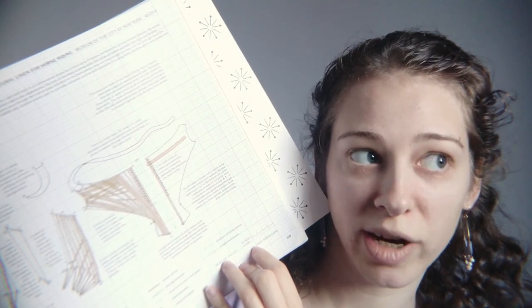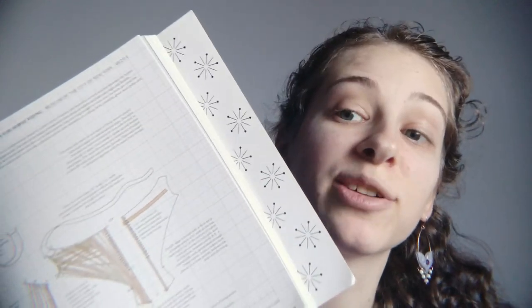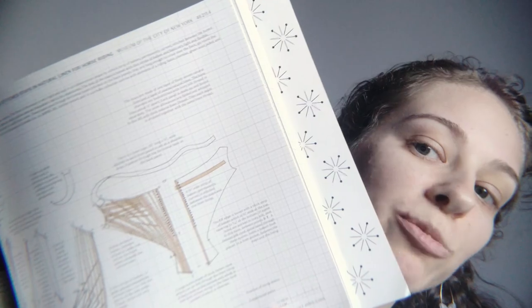The way this book works is there are patterns on a grid and you scale them up using the grid. It says here that each big square, meaning each group of four small squares, equals an inch. So basically what we need to do is find inch gridded paper, or half inch gridded paper, and draw out these shapes in accordance with how they are spread out on the grid.